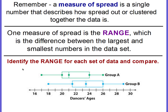We're going to identify the range for each set of data and compare. This is what we call a double box plot, where there are two sets of data that we're wanting to compare their spreads. These are dancers' ages — there are two different groups, group A and group B. We want to find the range for each.